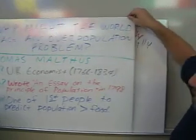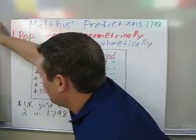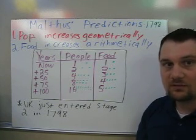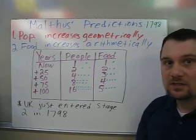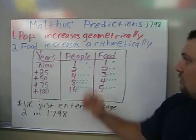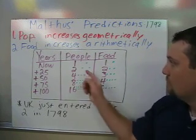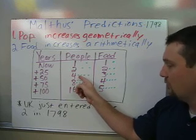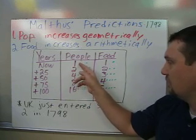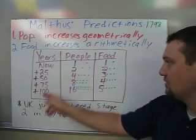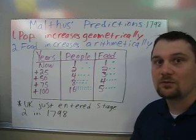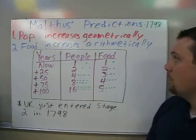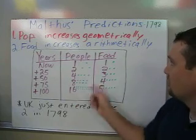Malthus predicted in 1798 that the population — he was specifically speaking about England at the time — would increase geometrically. For example, one person in the present day would have two kids, those two kids would also have two kids, and those kids would also have two kids. So population increases very quickly as you go through the years. He believed the population would increase geometrically.